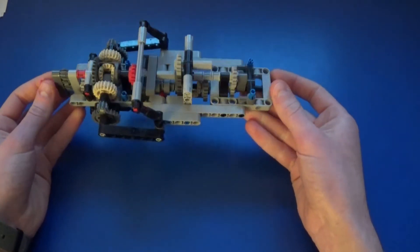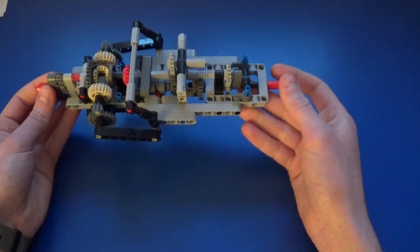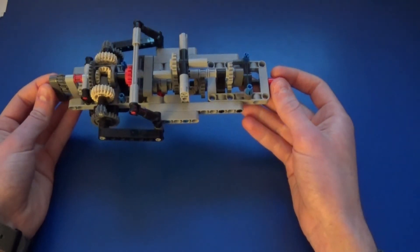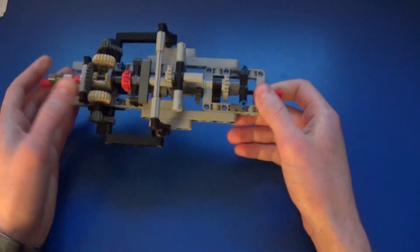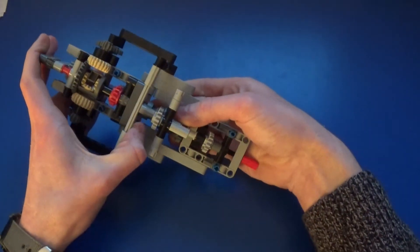However, watch this. This is what happens when I spin this one faster. Do you see what happened there? Okay, let's do that again - it's a little bit sticky to disengage.